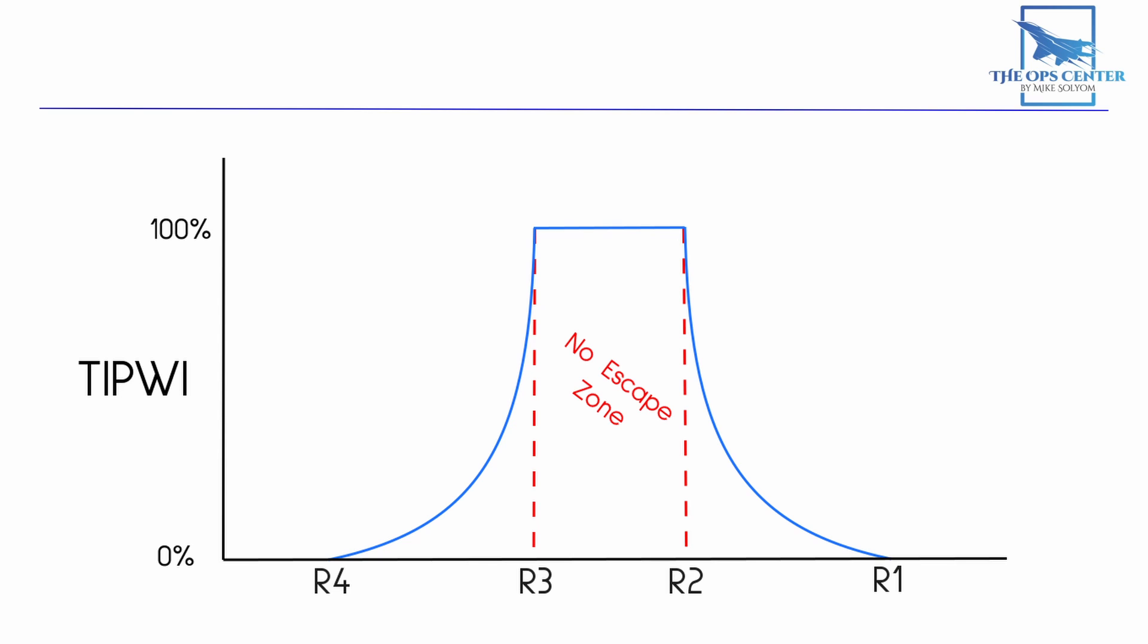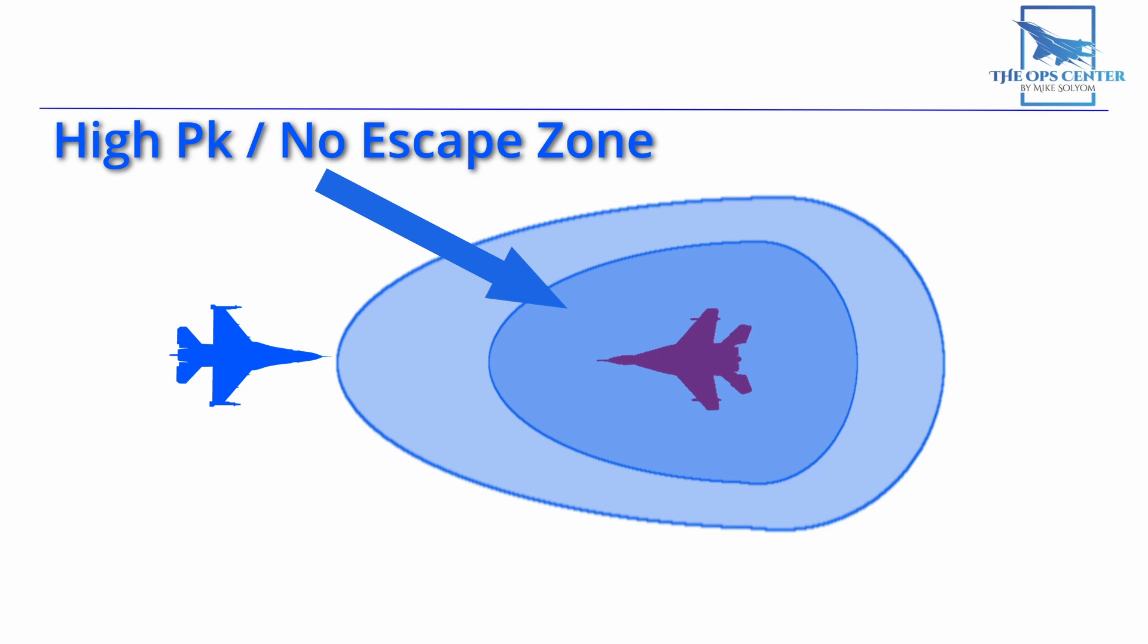The takeaway here is two-fold. First, to maximize your probability of a kill, you want your target in the heart of the WEZ. The closer it is to an edge, the more likely it is to find a way out. This includes the sides and the edge closest to the launching fighter. Second, pointing your fighter's nose at the target also increases probability of a kill.